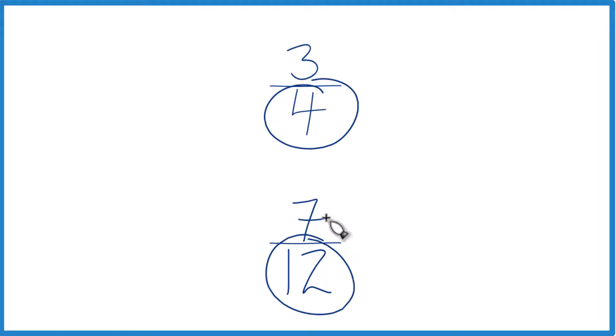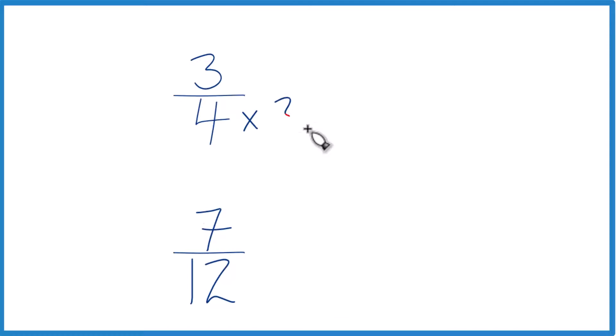Because then we could just compare the numerators and we'd be done. Why don't we, 4 times 3, that equals 12. And then down here we already have 12, so we're just going to keep this as 7 twelfths.